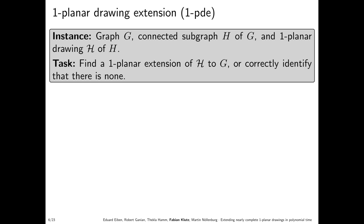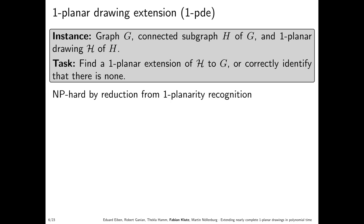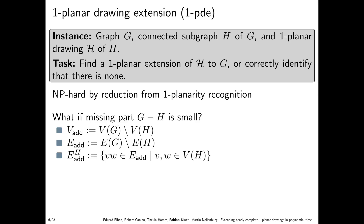Let's see what exists for one-planar drawing extension. We are given a graph g and a connected subgraph h — the connectedness property is required in our proofs, and it remains an interesting open problem whether it can be dropped — along with a one-planar drawing H of h. We want to find a one-planar extension to the whole graph g, or correctly identify that there is none. We can rather easily show this problem is NP-hard by reduction from one-planar recognition.